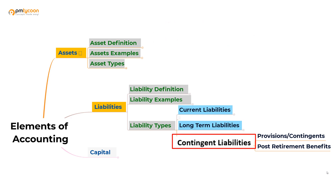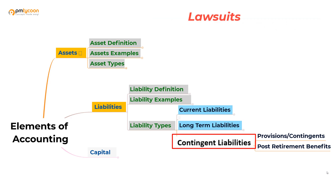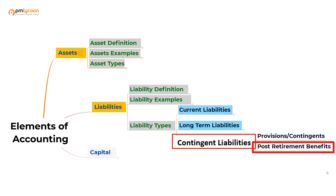Contingent liabilities are the money kept aside for unforeseen future events. Some examples include lawsuits — companies need to keep some money aside for any unforeseen lawsuits they may face, and that money is called a contingent liability. Another example is product warranties: when companies sell products, they provide warranty services, and the money kept aside for warranty issues is also a contingent liability. Similarly, companies that offer post-retirement pension benefits also carry these as contingent liabilities.